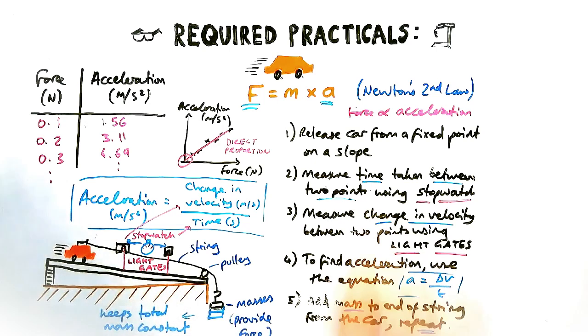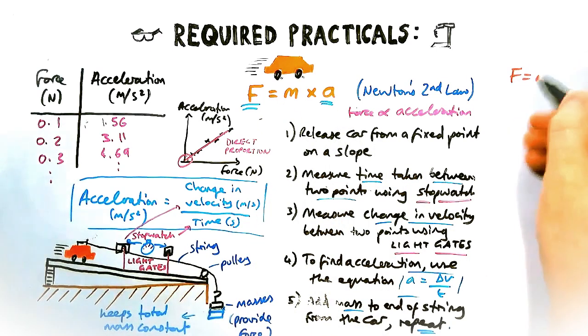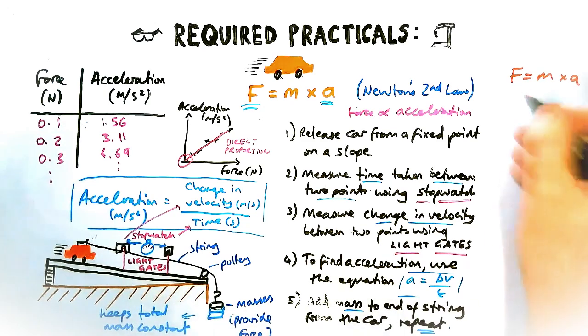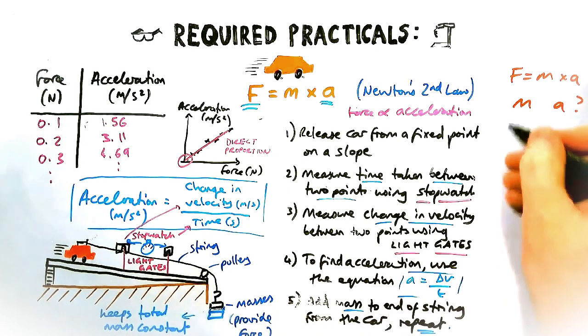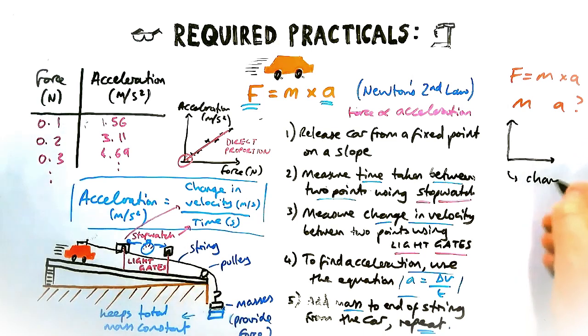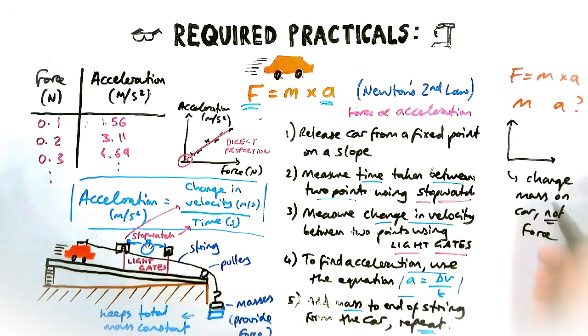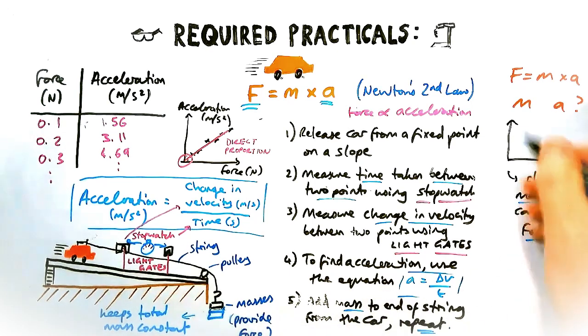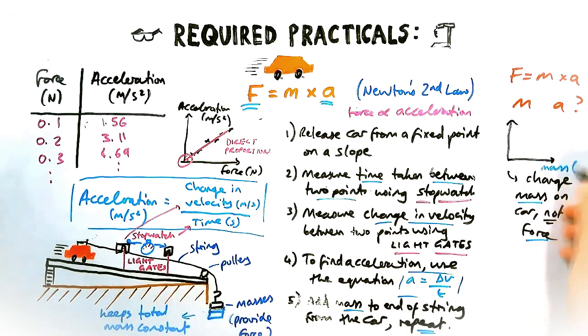Now there is another version of this practical which doesn't involve direct proportionality, which is slightly trickier to do and trickier to ask about, but we're going to obviously tackle it as well. If the force was constant on the car and the question asked you about how would the mass affect the acceleration, what you would do is instead of changing the mass on the pulley, you change the mass on the car. So changing the mass on the car, making the car heavier and heavier and heavier each time, not the force on the end.